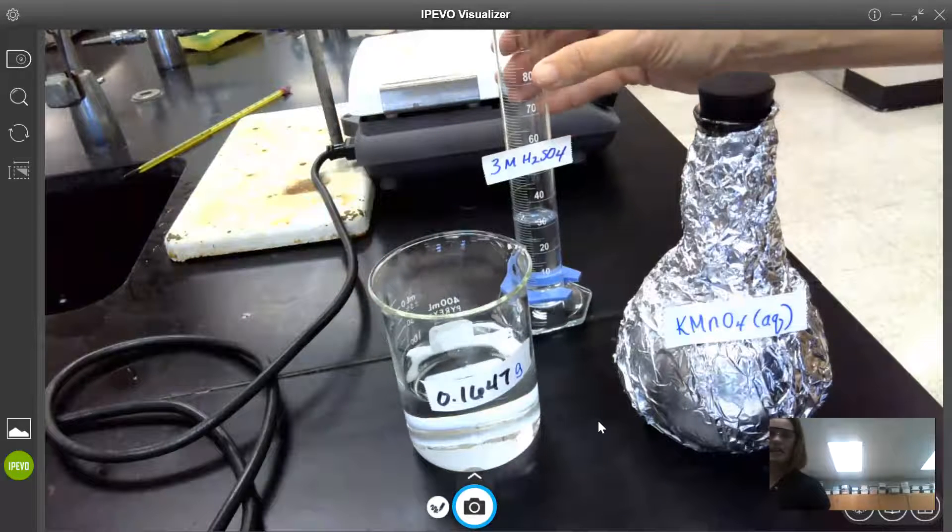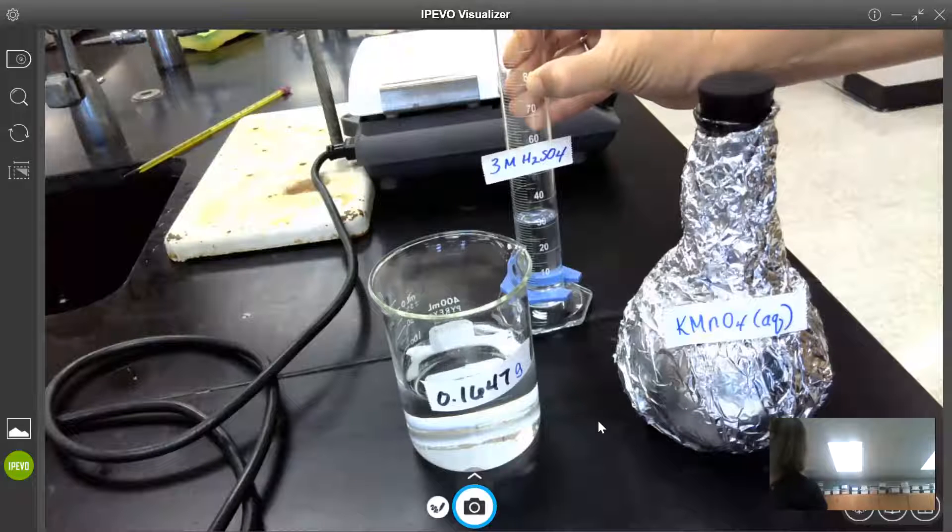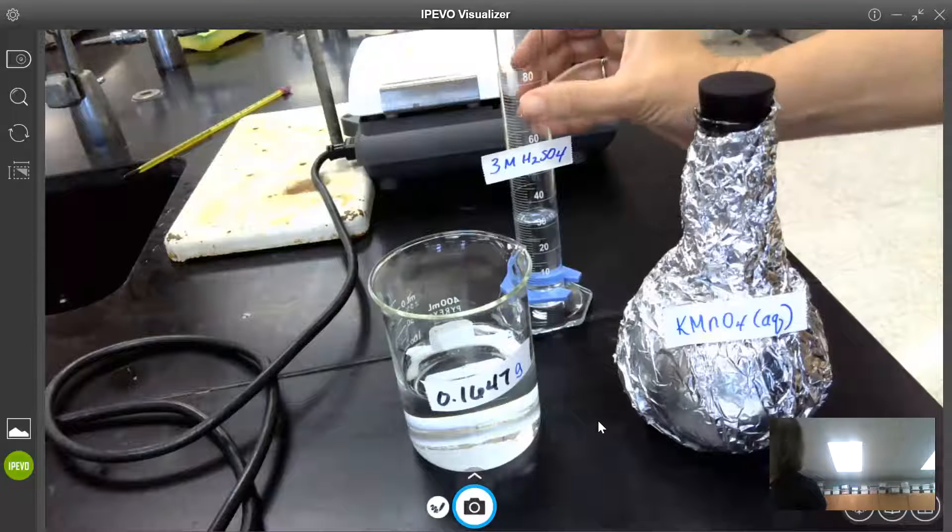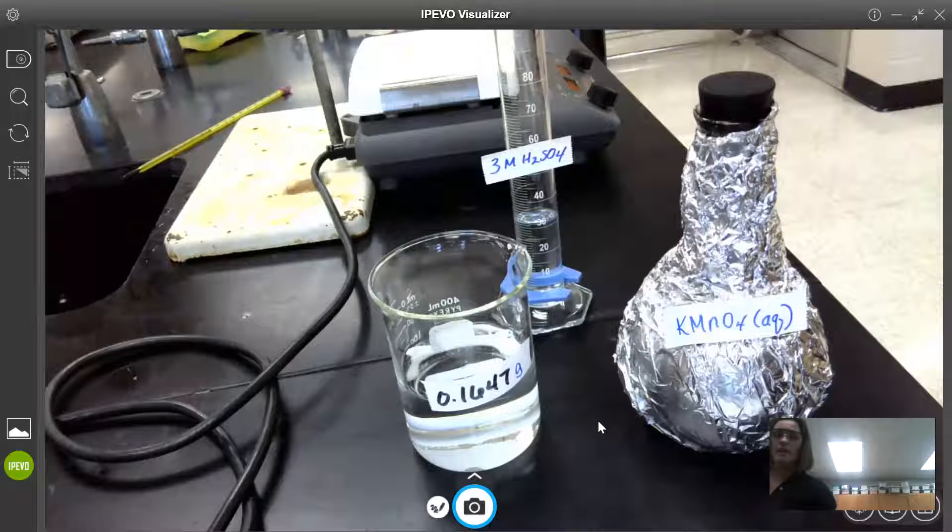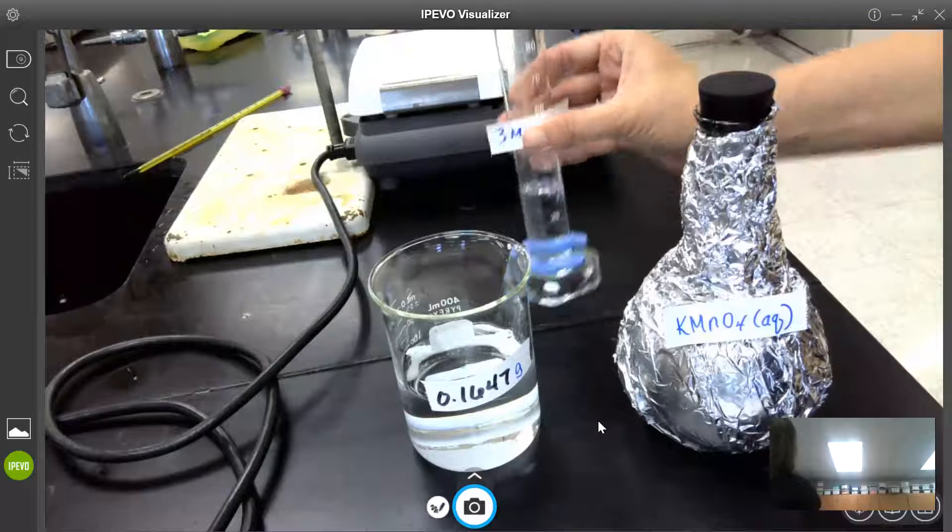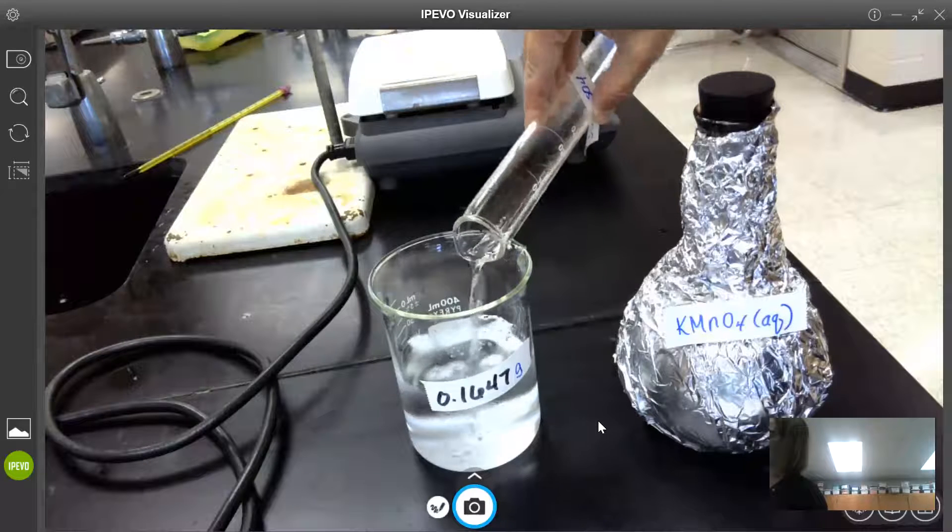I also need to add to this 30 milliliters of 3 molar sulfuric acid. The 3 molar sulfuric acid is added because recall that this titration that we're doing is a redox titration in acid. So this is our source of the acid.